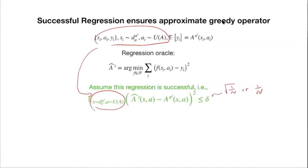Student question: when computing a-hat, the y_i are just estimates, not exact values. Yes — but they are unbiased estimates. Maybe one example has positive bias and another has negative bias, but they cancel out. This works like linear regression: the noise goes away because the estimates are unbiased. If the estimates were systematically biased, regression would fail. So the unbiasedness assumption is important.